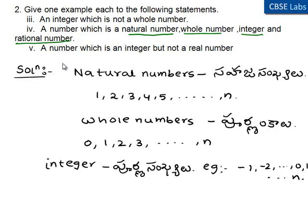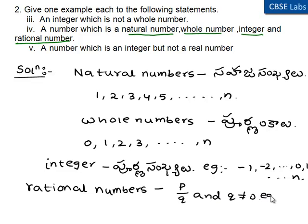Rational numbers are the numbers which are in the form of p by q where q is not equal to 0. Examples: 1 by 8, 1 by 4, 2, 3, etc.